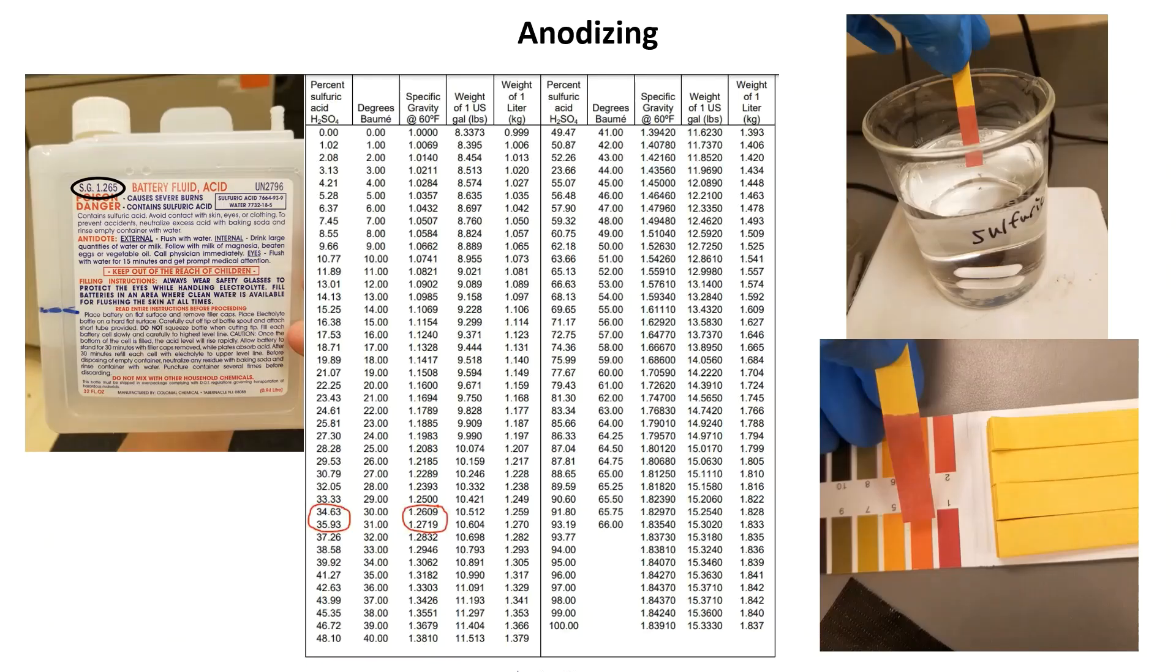The electrolyte needed for anodizing aluminum is sulfuric acid or common car battery acid, available at most auto parts stores. The needed concentration is 10 to 15 percent by weight. This is the electrolyte used for Type 2 and 3 anodizing, with the difference between them being the temperature of the solution and the current delivered to the parts. Type 2 anodizing is referred to as decorative, Type 3 anodizing is referred to as hard anodizing.